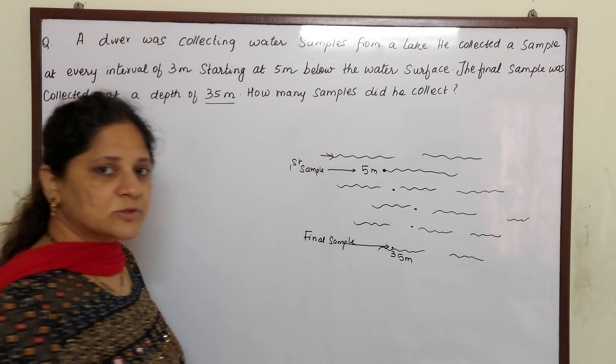Every interval of 3 meters he collected a sample — that means once he goes 3 meters he will collect a sample. The diver has totally gone 30 meters. So how many samples has he collected? This is a case of cross multiplication: 1 sample per 3 meters over 30 meters gives us 30 divided by 3, which equals 10 samples.